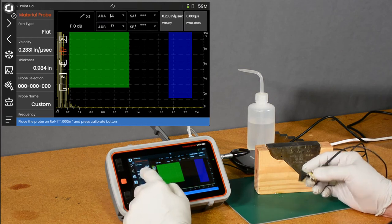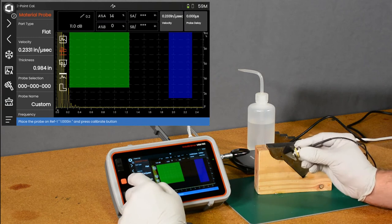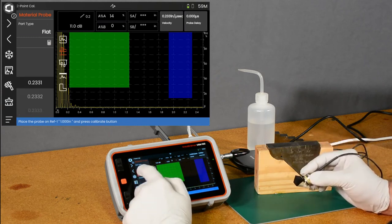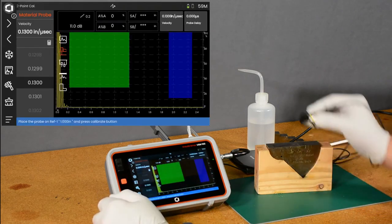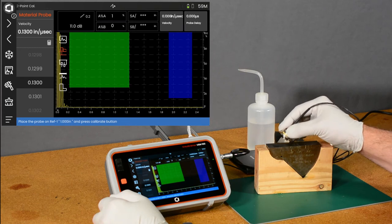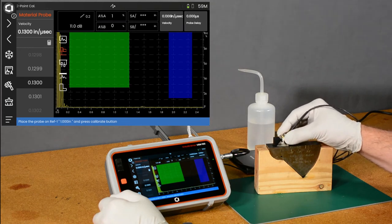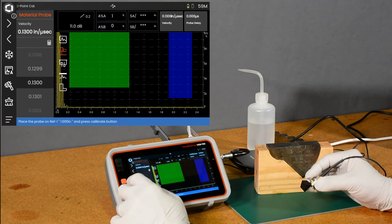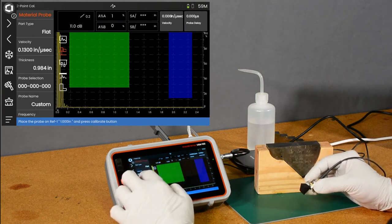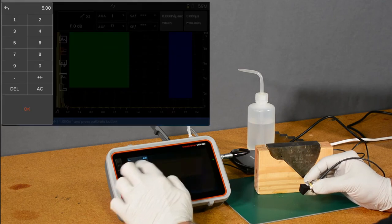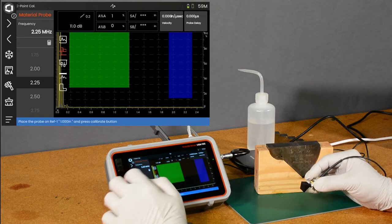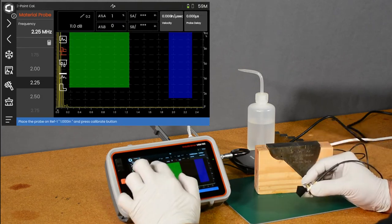First thing we ought to do since we're going to be working in shear wave is just change the ballpark figure for our velocity to get us in the general area of shear velocity and steel. I picked 0.13 there. Let's take a look at our probe frequency. We'll set that to 2.25 to better optimize the pulsar for this probe.